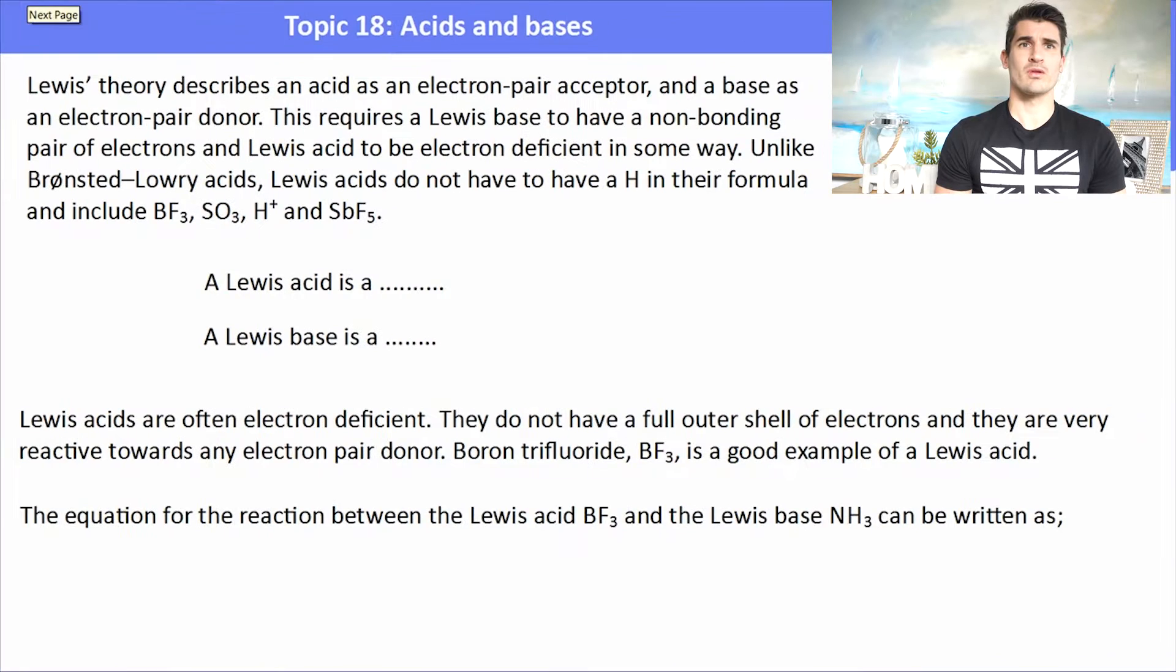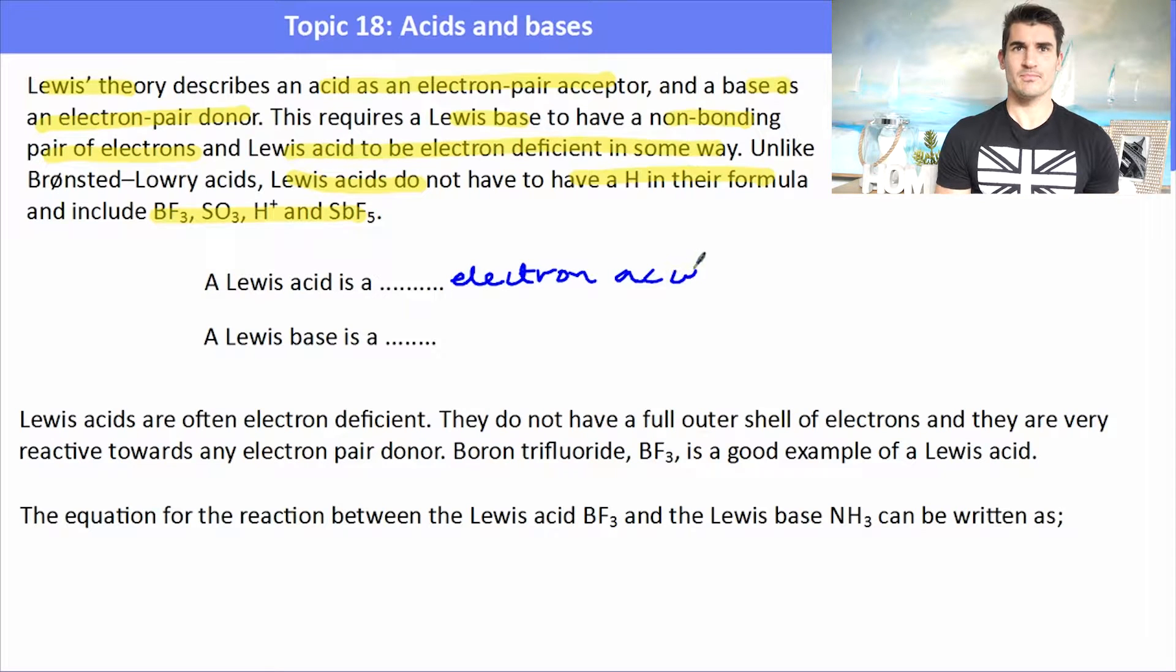So Lewis theory describes an acid as an electron pair acceptor and a base as an electron pair donor. This requires a Lewis base to have a non-bonding pair of electrons and a Lewis acid to be electron deficient in some way. Lewis acids do not have to have a H in their formula and include molecules such as BF3. So the Lewis acid must be electron deficient in some way and we'll talk about that in this video.